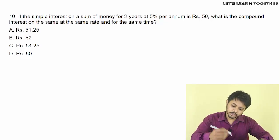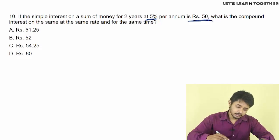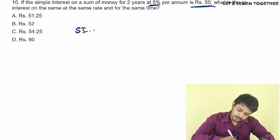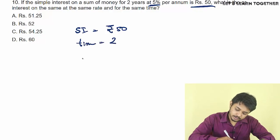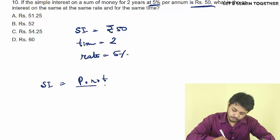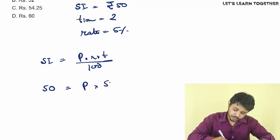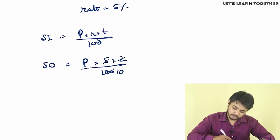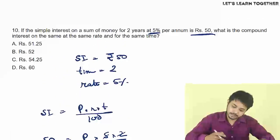Next question. If the simple interest on a sum of money for 2 years at 5% per annum is Rs. 50, what is the compound interest on the same sum at the same rate for the same time? Simple interest is Rs. 50, time is 2 years, rate is 5%. Using the formula: SI equals P times R times T by 100, so 50 equals P times 5 times 2 by 100, giving principal P equals Rs. 500.